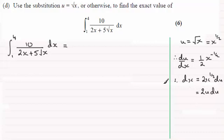So I can substitute this into here. What we've got is an integral where we've got 10 divided by 2x. Well x is going to be u squared. So we've got 2u squared. And then we've got 5 root x, which is just going to be 5u because u is root x. And for dx we can substitute 2u du.